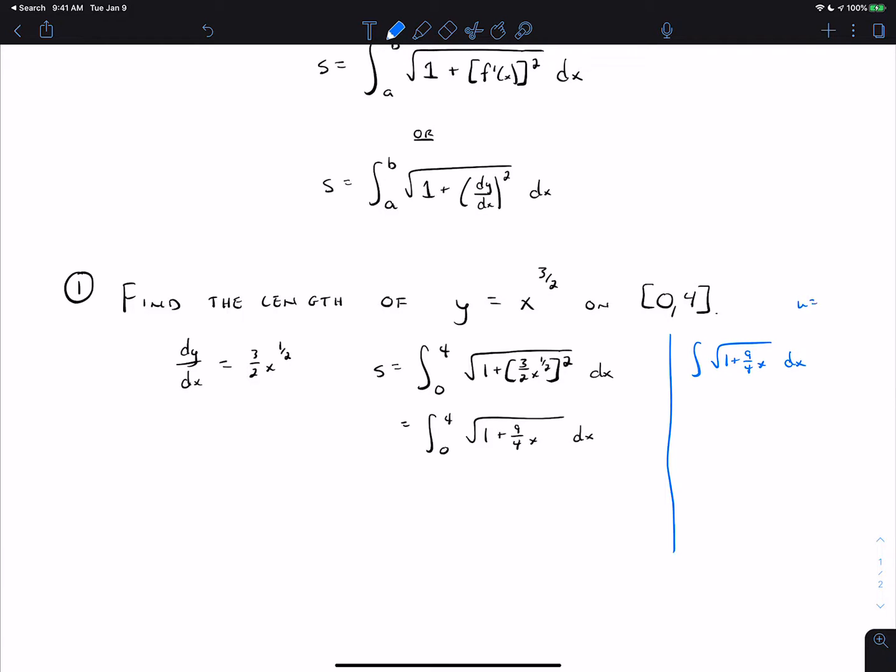So u equals 1 plus 9 fourths x. That means du is 9 fourths dx. We multiply inside by 9 fourths and outside by 4 ninths. We get 4 ninths times the integral square root of 1 plus 9 fourths x times 9 fourths dx. That's then 4 ninths integral of u to the 1 half du.